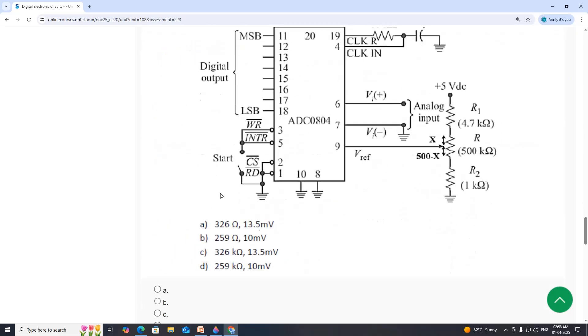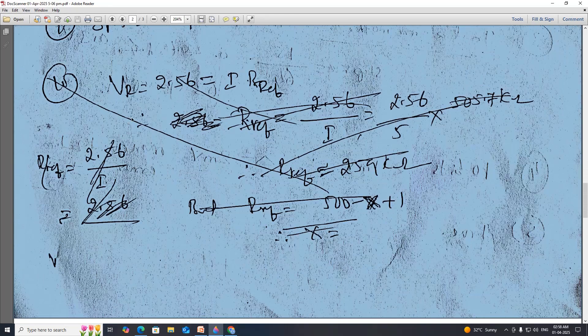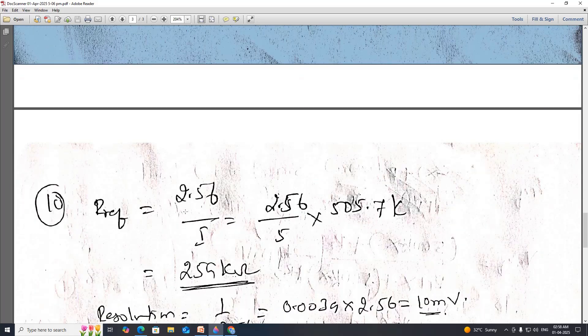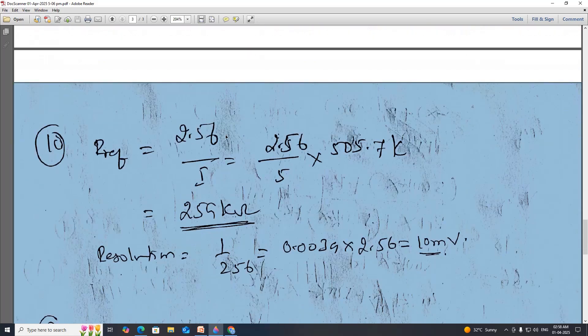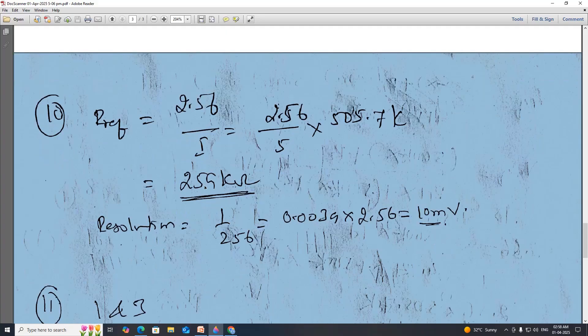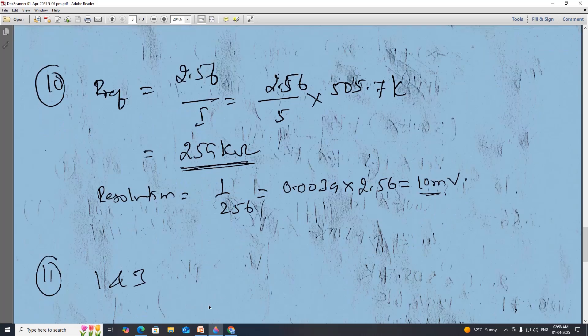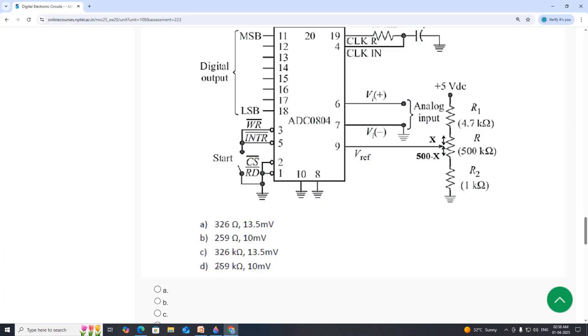10th one. So for 10th one, we have to find X value. But the calculation they have given is wrong. So 10th, V reference equal to 2.56. This is V reference by I, total current I. This is equal to 2.56 divided by 5 by 5.7K. This is equal to 259K. But this is not the correct value for X. The resolution is 1 by 256, that is equal to 0.0039 into 256 is 10 millivolt. So answer is option D.